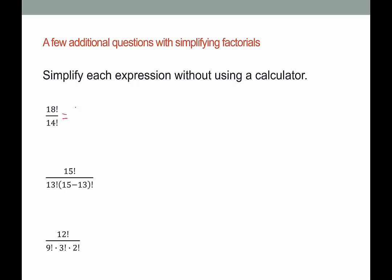I'm going to expand 18 factorial, but where am I going to stop? I'm going to stop at 14 factorial. So I'm going to say 18 times 17 times 16 times 15 times 14 factorial. Now I have a common factor in the numerator and denominator of 14 factorial. Multiplying what's left — 18 times 17 times 16 times 15 — gives us 73,440.